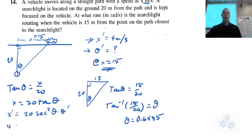So then x prime is 4, 20 times the secant squared of 0.6435, and we're trying to find theta prime. So then you just do some isolating there, and you should get your angle.